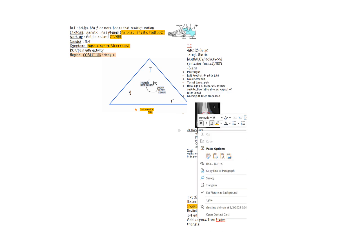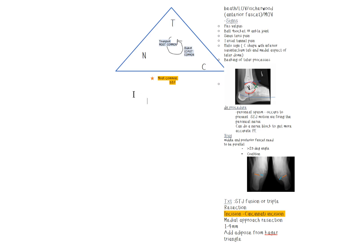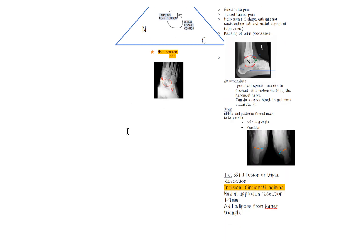So we know about the signs, we know about the diagnostic procedures. Now, how do we treat this? One of the treatments is a subtalar joint fusion or a triple depending on how the other joints are. Resection—make sure you know the incision they love to use, it's called the Cincinnati incision, which is just a medial approach. They're resecting about one to four millimeters of bone and putting adipose tissue from the Kager's triangle. Not very commonly done because the success rate is pretty poor.